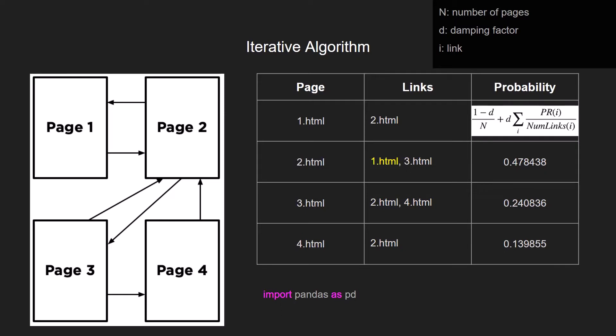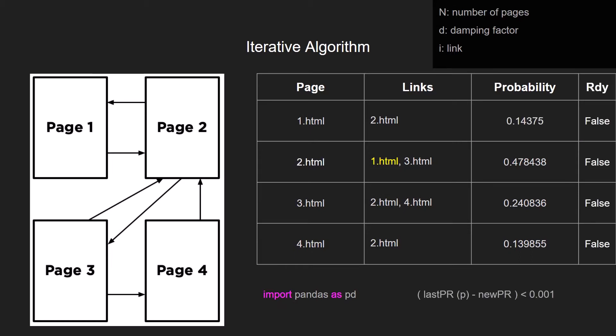But we need a reason to stop because this probability could be endless. So we defined a condition where if the probability is not changing more than 0.001, we just define a column. I used a pandas column again to understand when the page is ready, so it is not changing too much the probability. So at the end we can have some kind of probability like this, and it is using the iterative algorithm to define the page ranking.